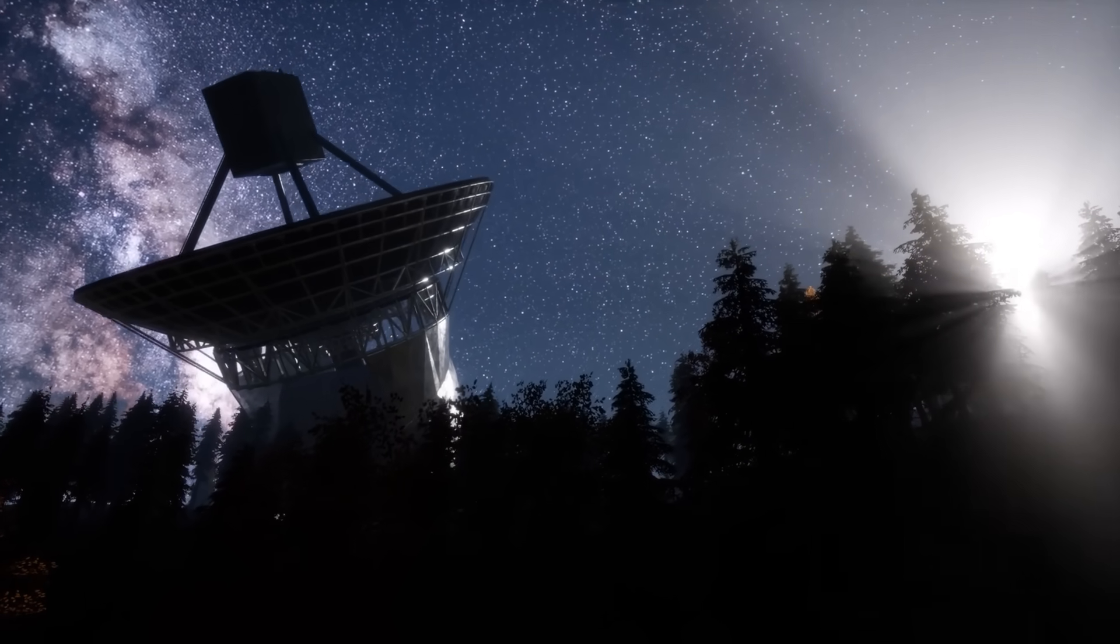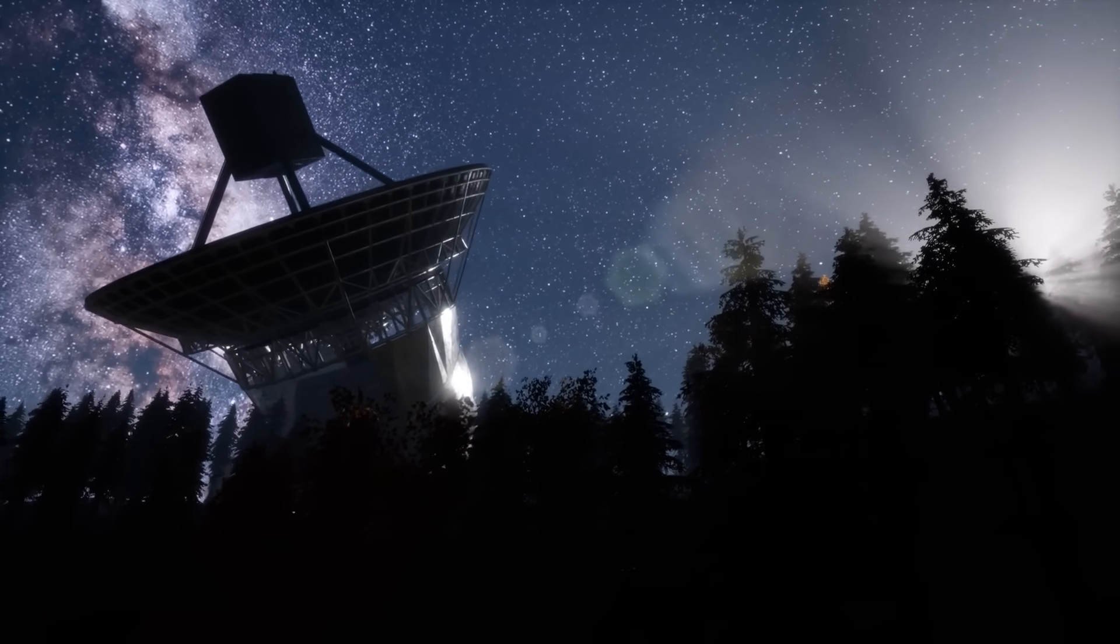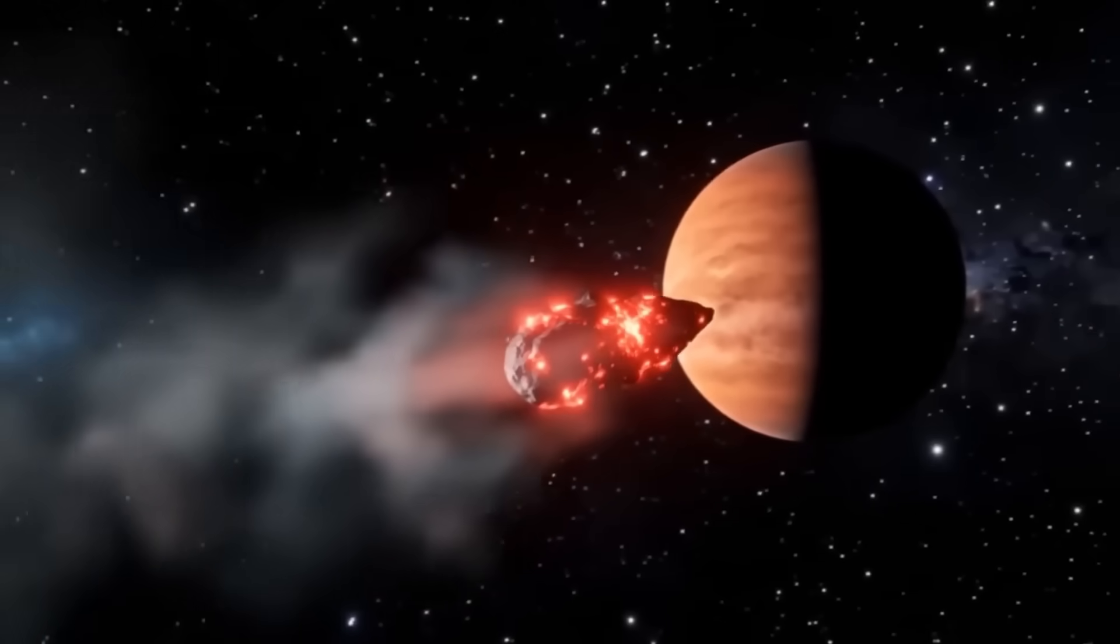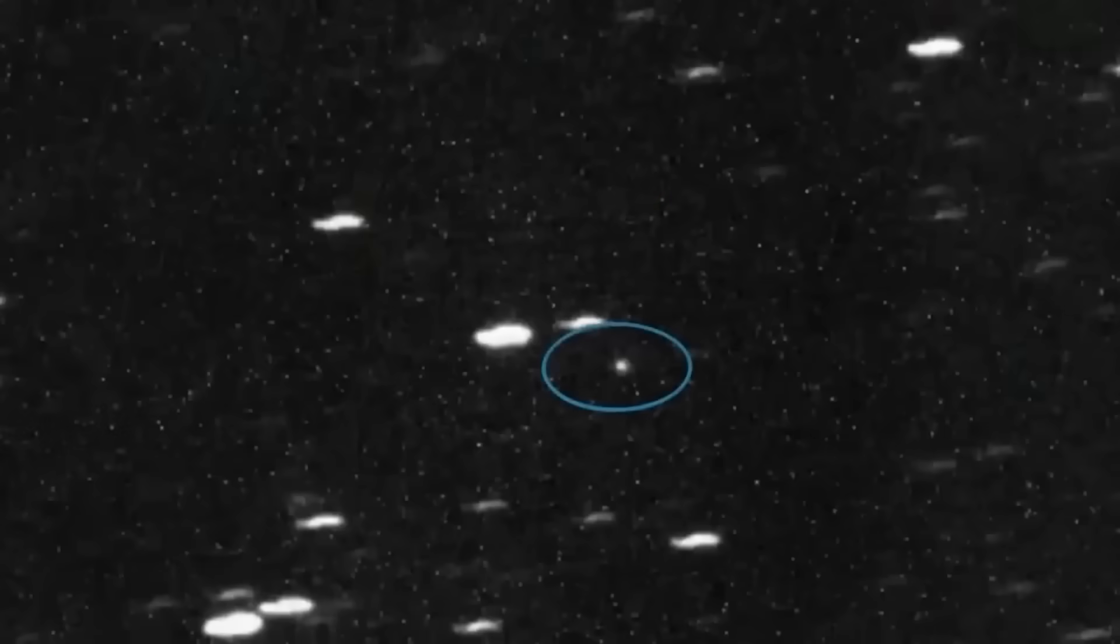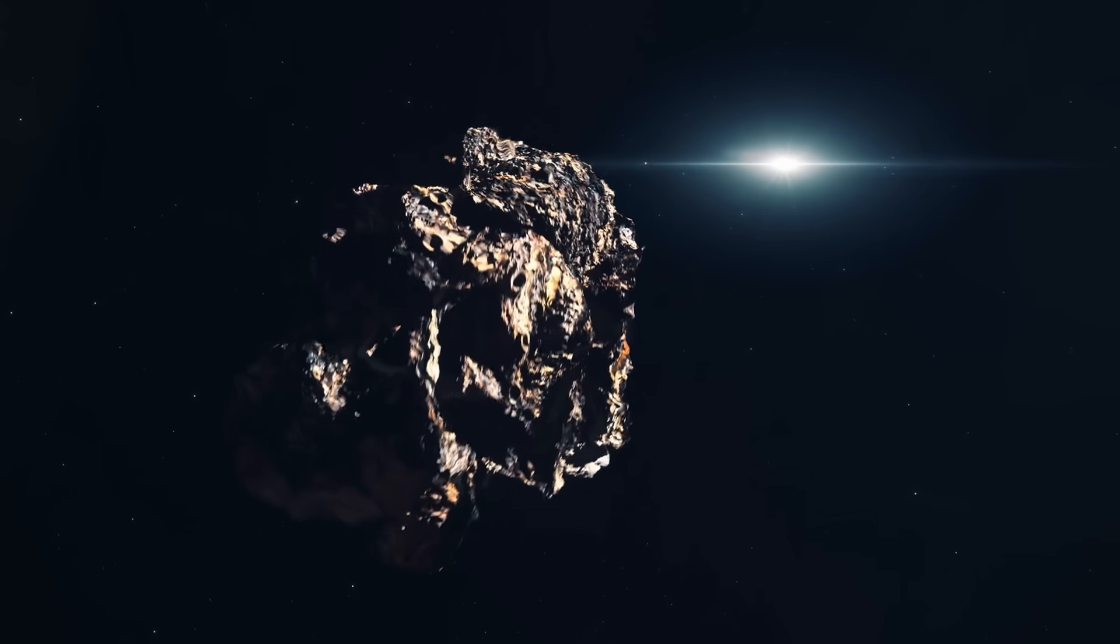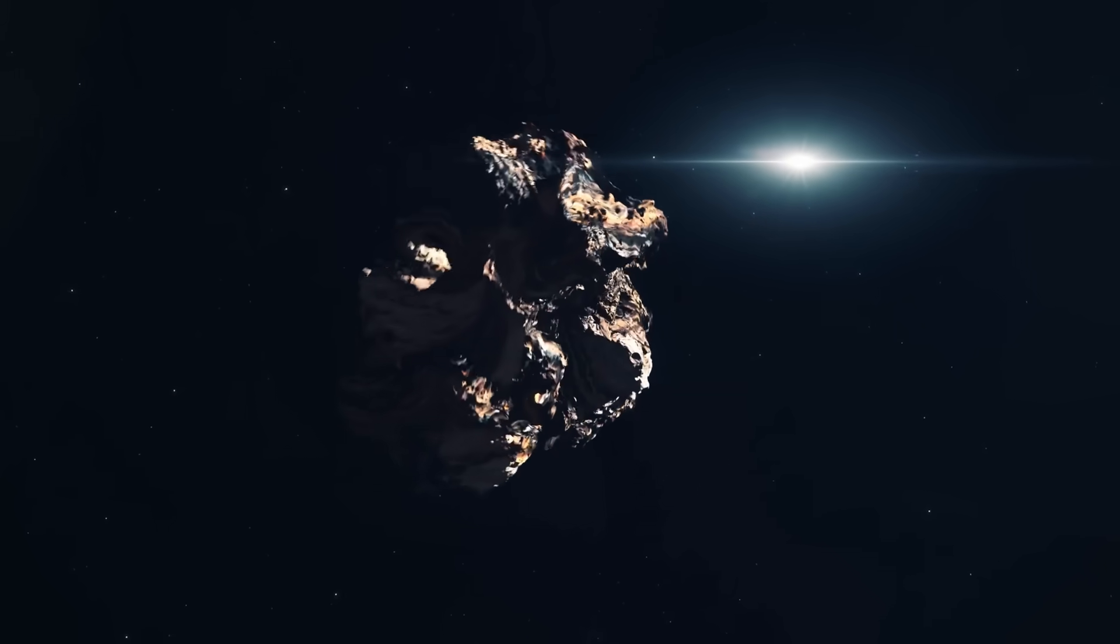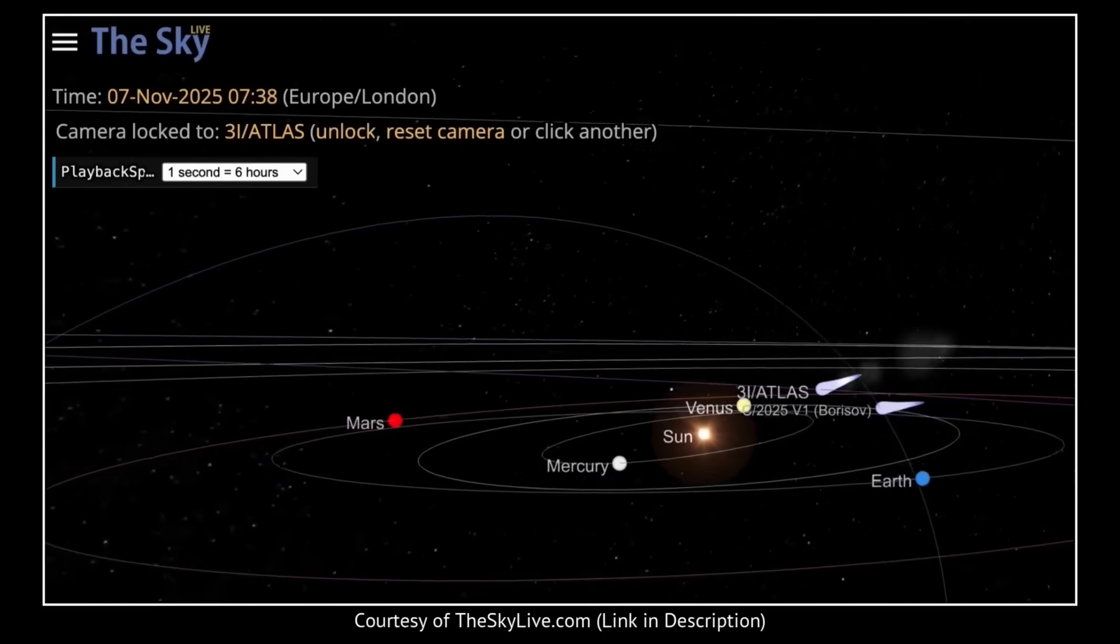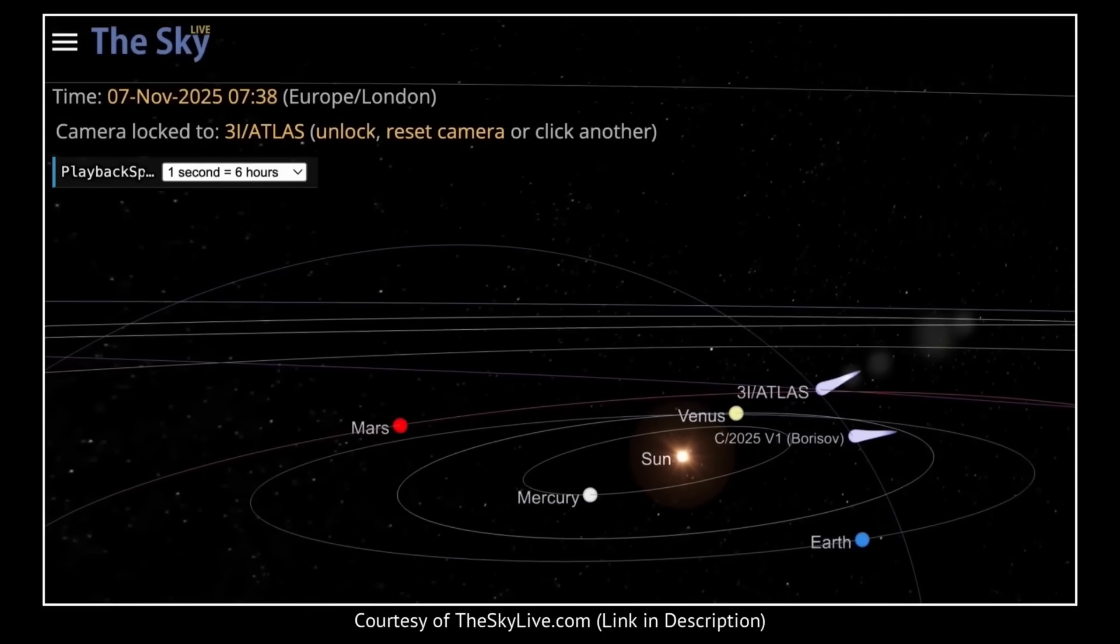A global network of tracking stations fed in a fresh batch of precise position measurements. Same telescopes, same target, same reduction pipeline. Nothing about the observing process changed. And yet, when those positions were plugged into the orbit solver, the fit started to break. Not violently, not dramatically, just enough to set off alarms in the math.